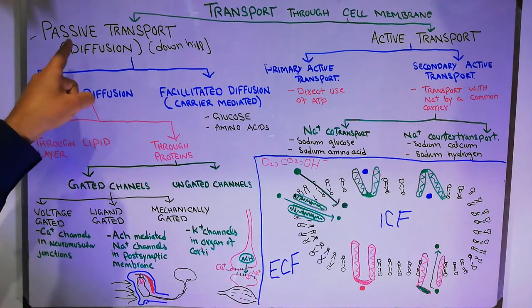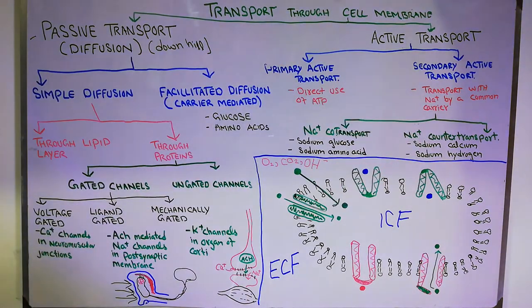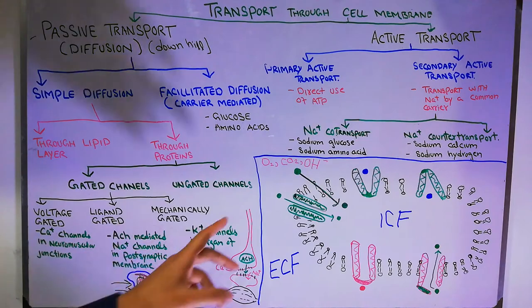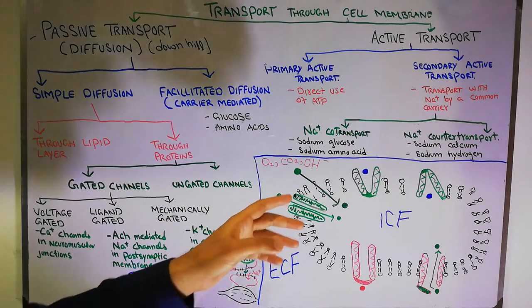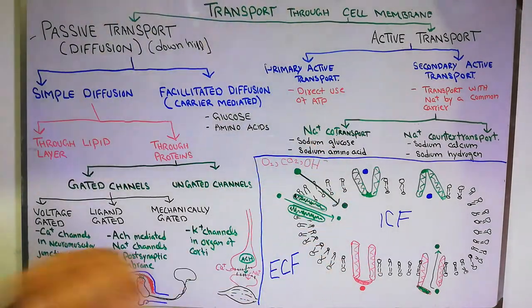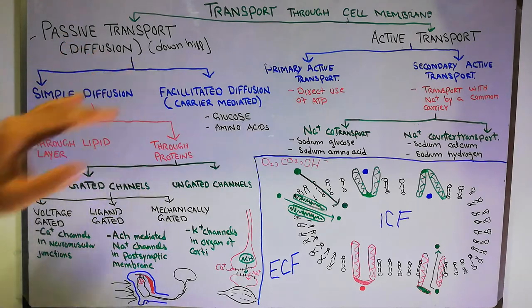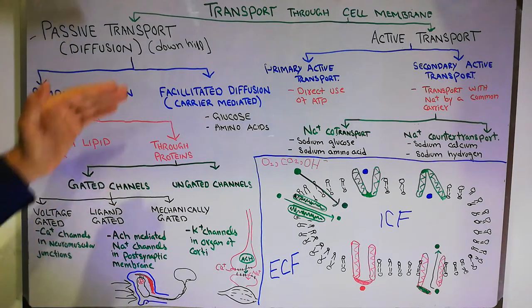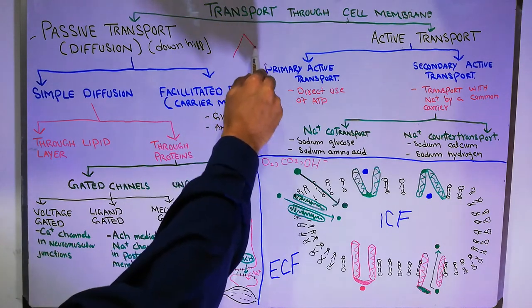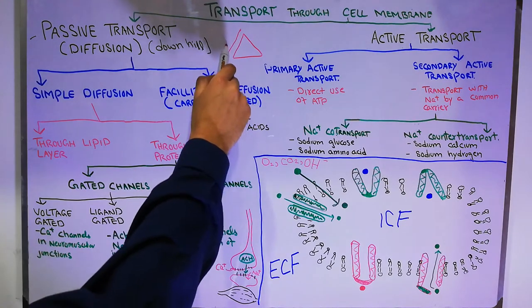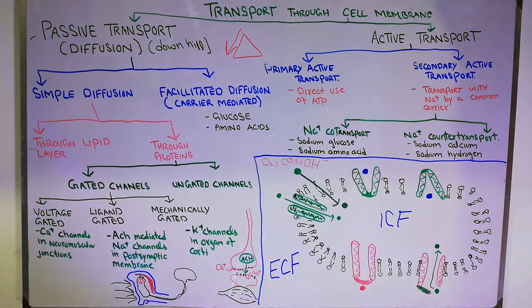There are two main types of transport: passive transport and active transport. In passive transport, no energy is required for substances to come in or go out of the cell. Passive transport is also known as diffusion or downhill transport, because it does not need energy — it is like coming downhill from a hill toward the ground, requiring no energy.